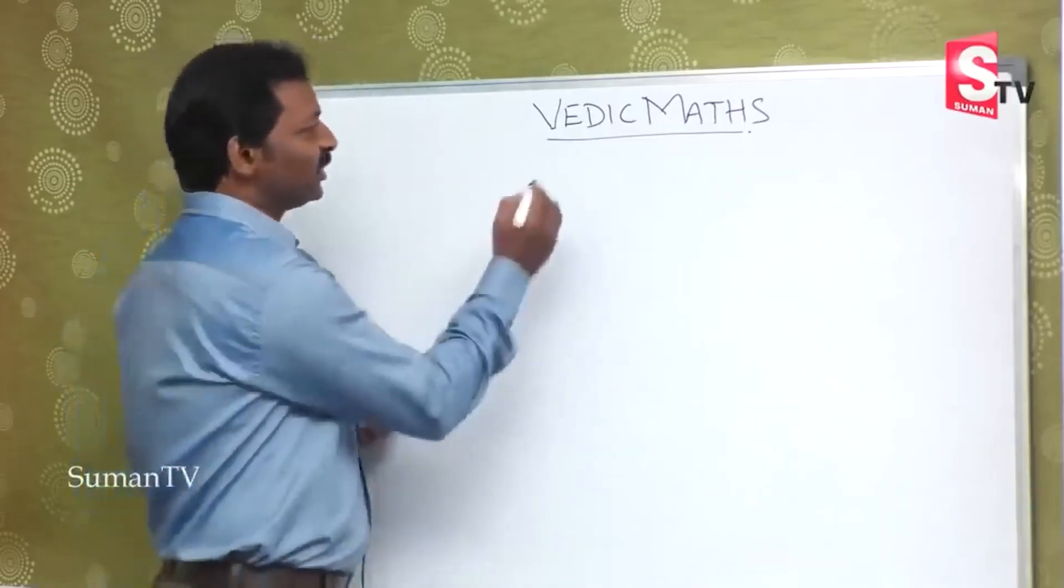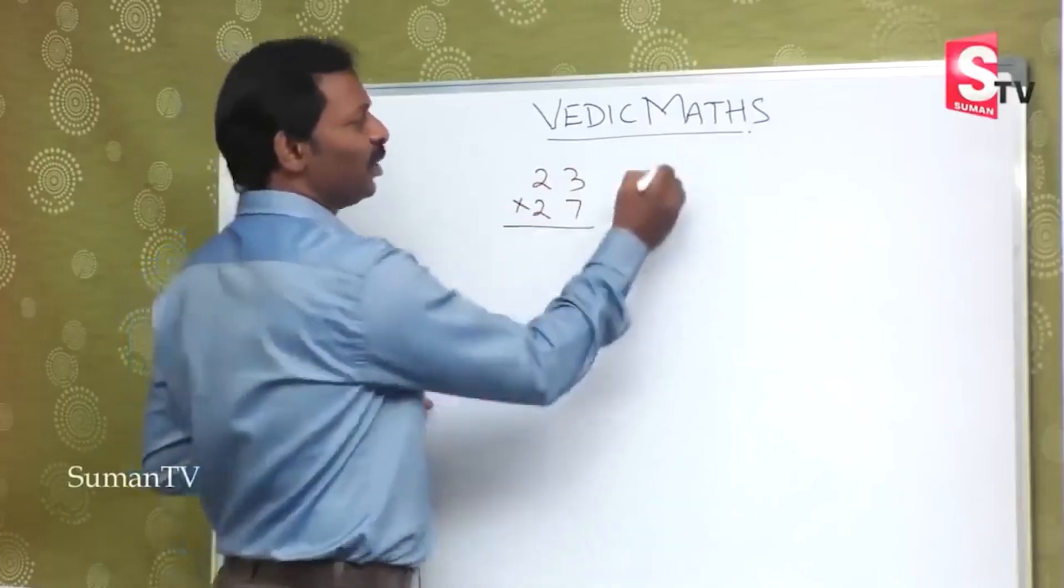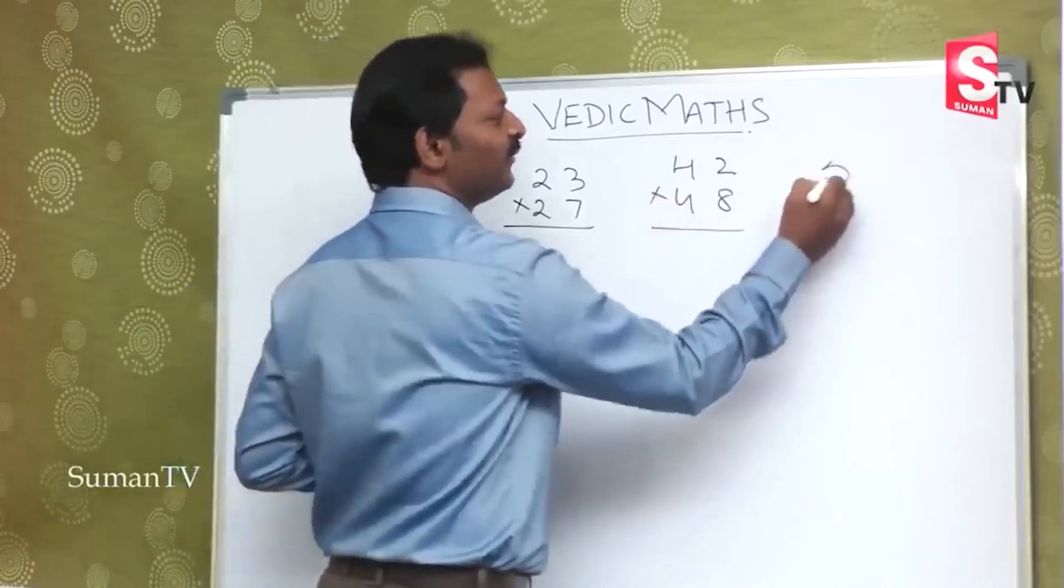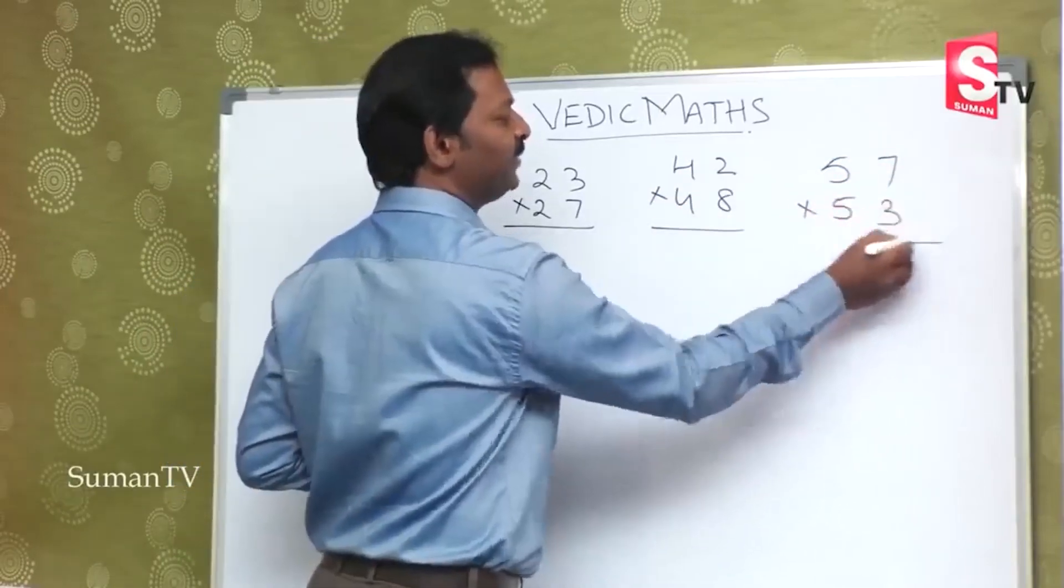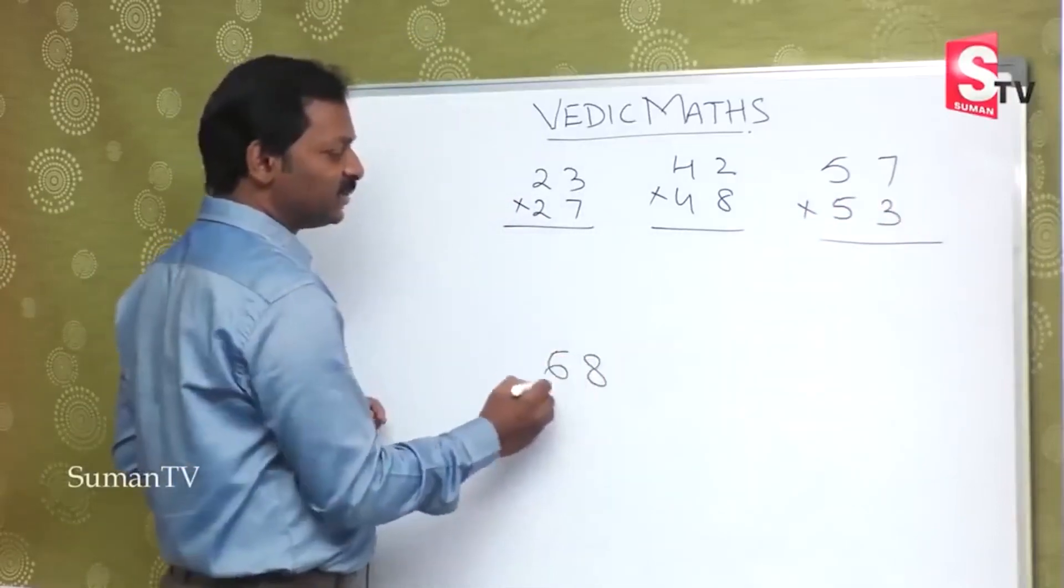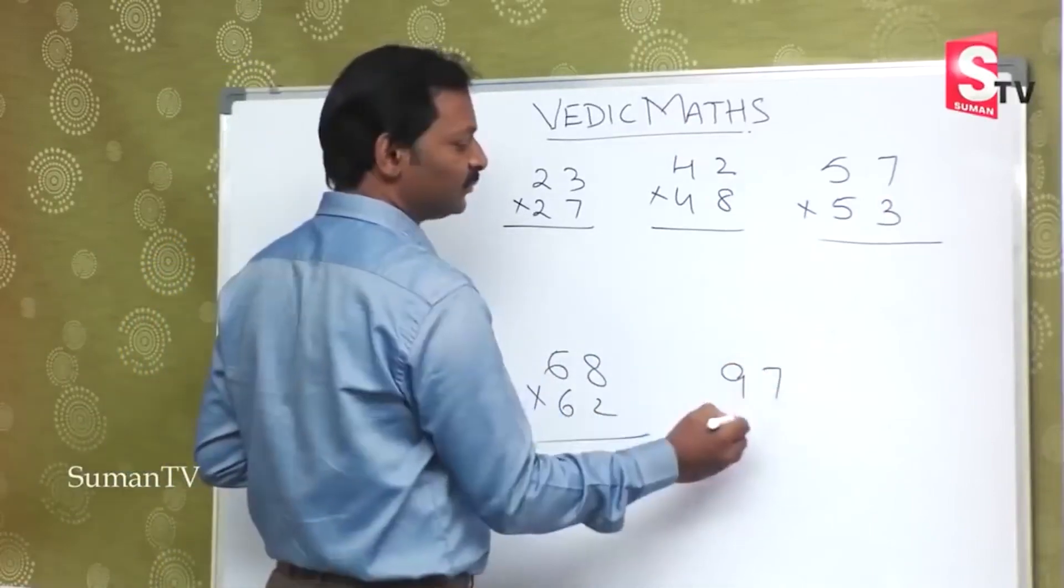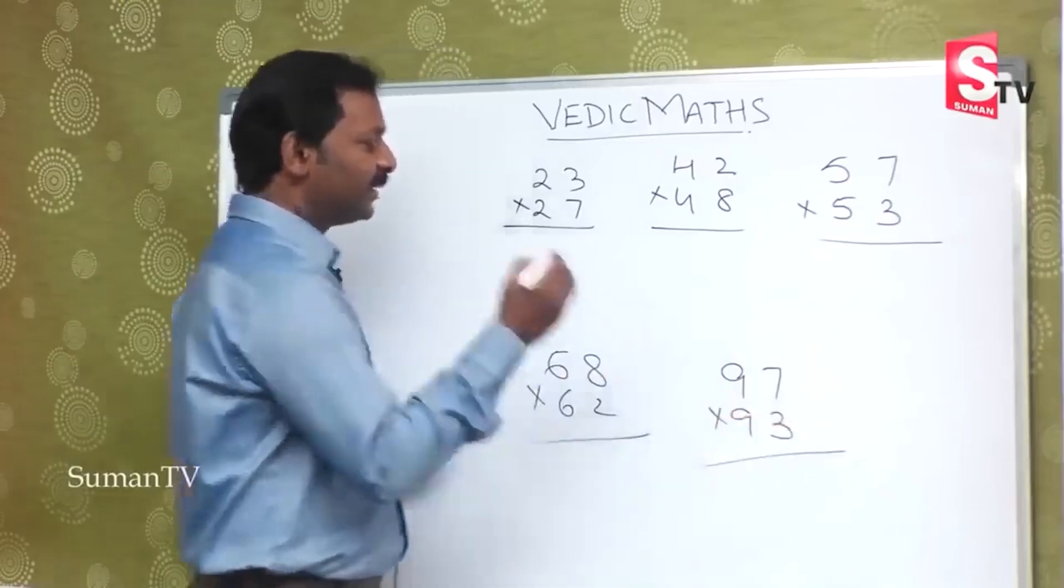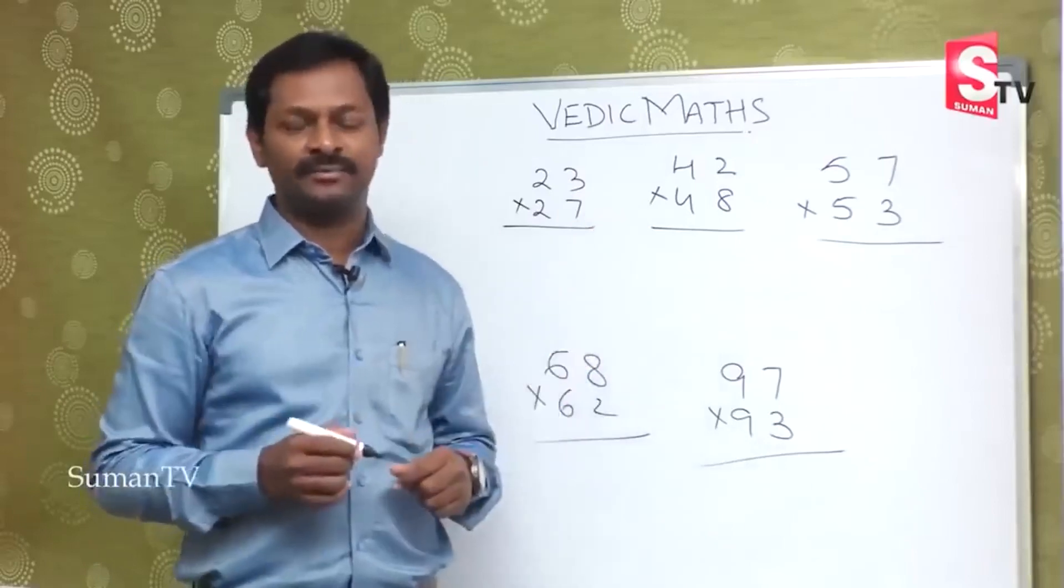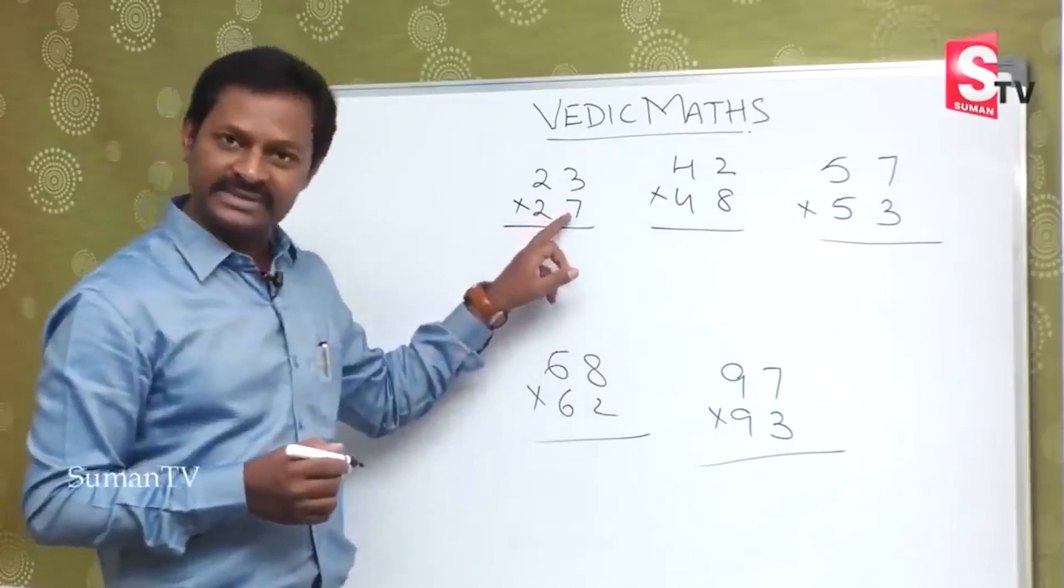Suppose 23 is multiplied by 27, or 42 is multiplied by 48, 57 is multiplied by 53, 68 is multiplied by 62, 97 is multiplied by 93. It is a two-digit number by two-digit number. In this class, we will multiply using a special method.